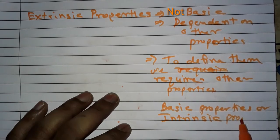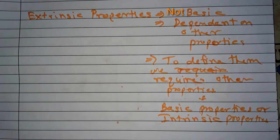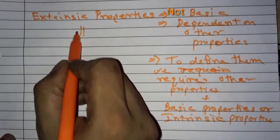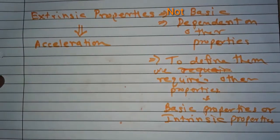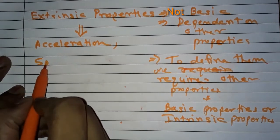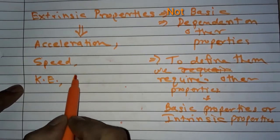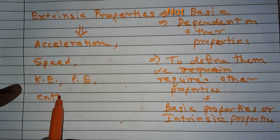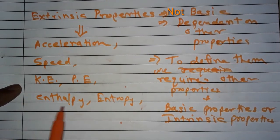Examples of extrinsic properties are: acceleration, speed, kinetic energy, potential energy, entropy, etc. Let's see how these properties are dependent on other properties, that is basic or intrinsic properties.